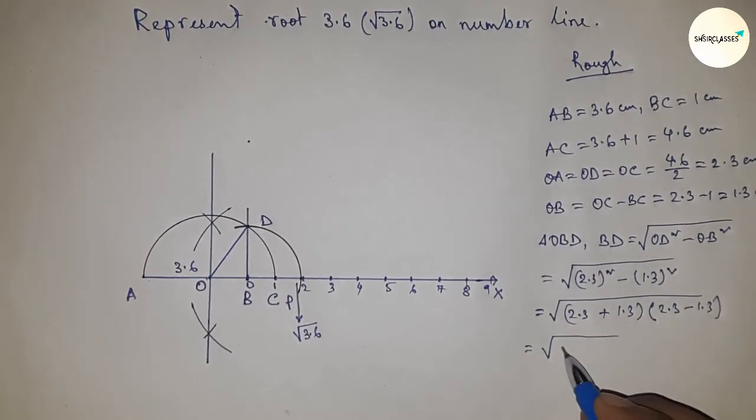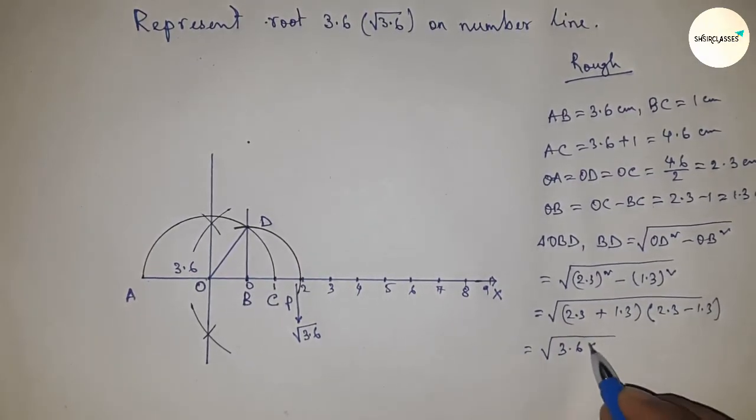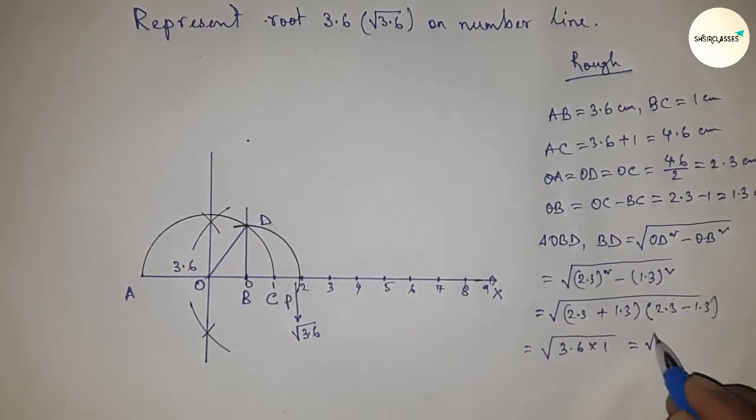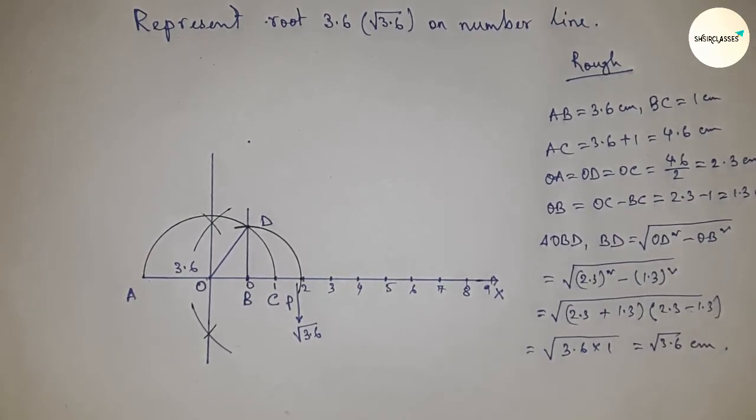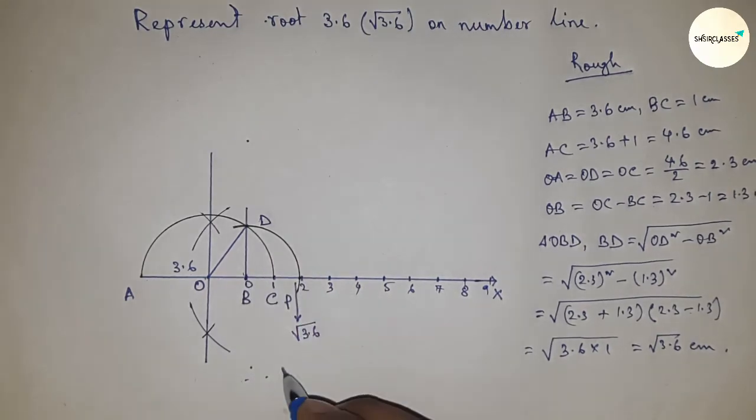This equals 3.6 times 1, which is root 3.6 centimeters. Therefore, distances BD and BP are equal, so BD equals BP equals root 3.6 centimeters.